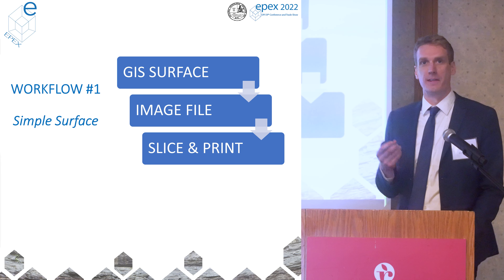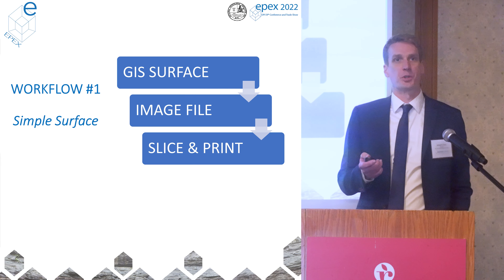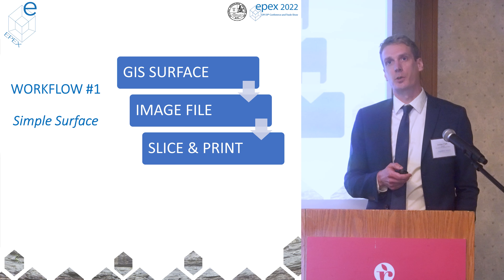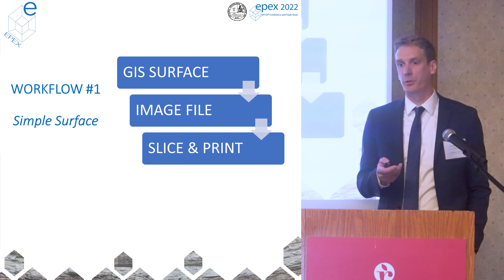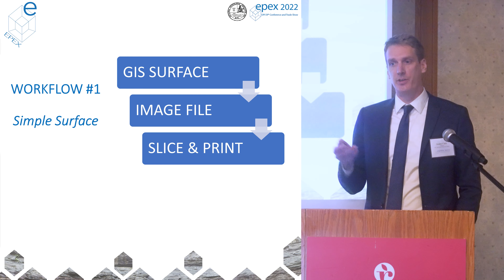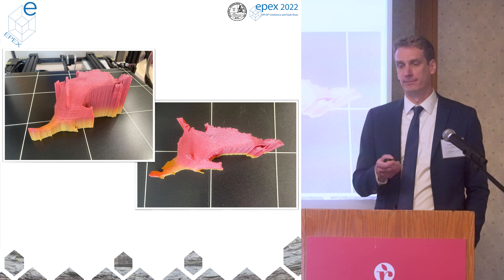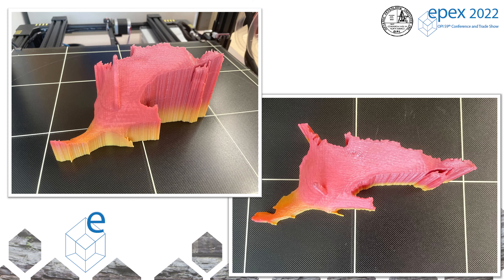Workflow number one, the simplest workflow, is what we saw at the beginning. We have a GIS surface — the kind that you would make for any sort of two-dimensional map, like gridding and contouring. The output is an image file, and that image can be sent directly to your 3D printer for printing. This is the output of that: you can see the model, it's the basic shape of the Precambrian surface. We've got the well point here on the model, and it shows you where the ground elevation is.